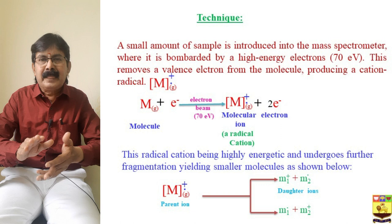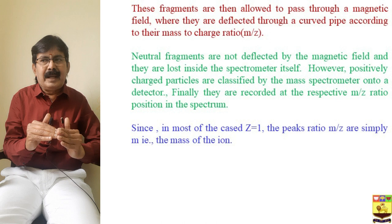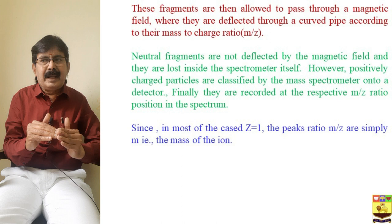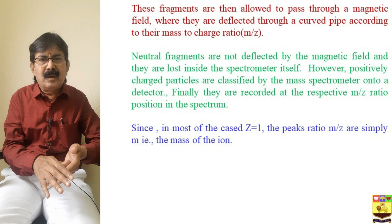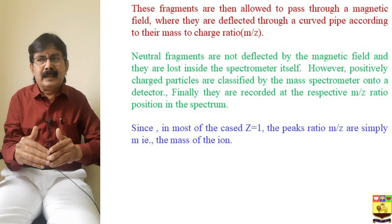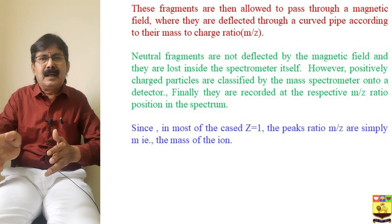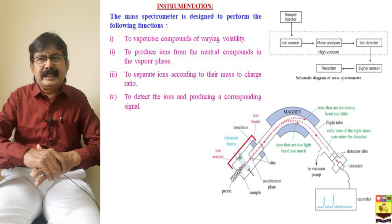These fragments are allowed to pass through a magnetic field where they are deflected through a curved pipe according to their m/z value. Only cations are deflected — the neutral fragments are lost by bombarding on the pipe walls. Only the cationic radical travels through the mass analyzer and is recorded according to its m/z value. In most cases z equals one, so m/z equals the molecular mass of the ion.